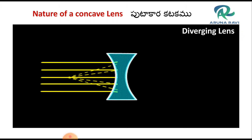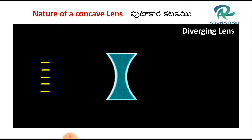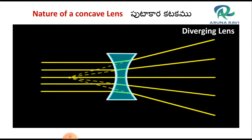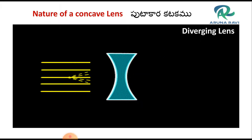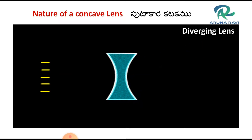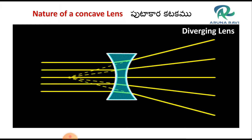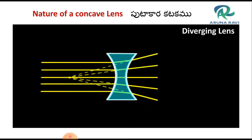Here you can see a parallel beam of light incident on a concave lens. After refraction, they are diverging.